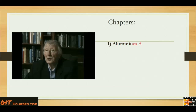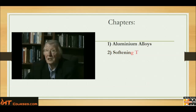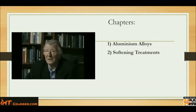Chapter 1: Aluminum Alloys. This will discuss the categorization, the use of alloying elements, and how the alloying elements influence the final metallurgy of the particular alloy. Chapter 2: Softening Treatments. This will discuss such processes as annealing and stress relieving.